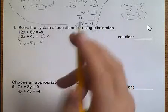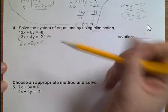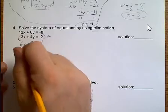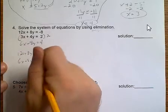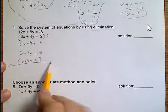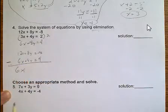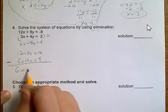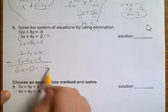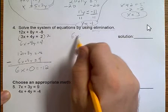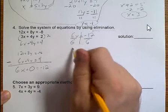And that gives us 6x plus 8y equals 4. Now, the reason I did that is because now my y values are the same. Because my y values are the same, I can actually subtract my equations and get an answer. Well, 12x minus 6x is 6x. 8y minus 8y is 0. And negative 8 minus 4 is negative 12. So now that I have that 6x equals negative 12, when we divide both sides by 6, we get that x equals negative 2.